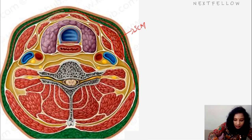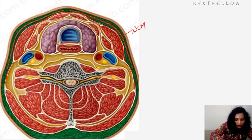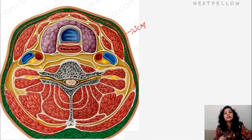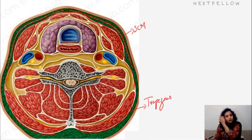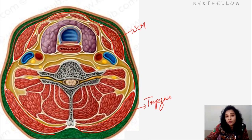It runs beneath the superficial fascia and we can see the other sternocleidomastoid as well. Posteriorly it encircles the trapezius muscle. That is about the enclosing, and it also forms the roof of the posterior triangle. Between the sternocleidomastoid and the trapezius, this gap is the posterior triangle.